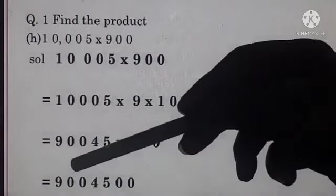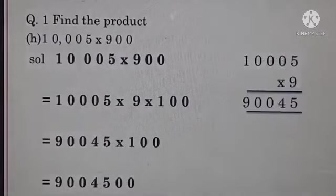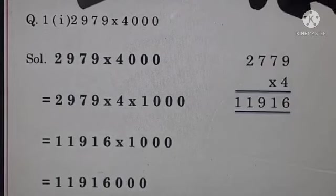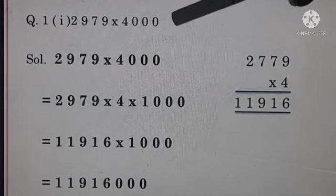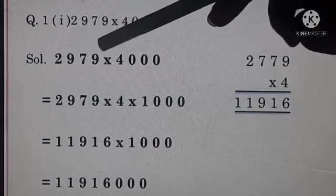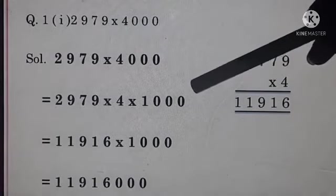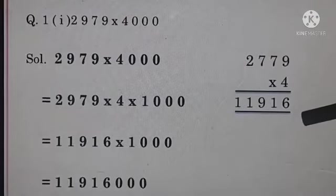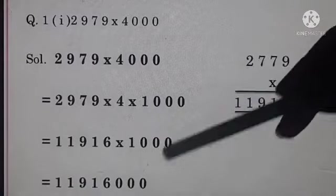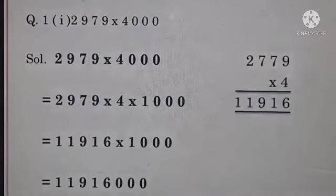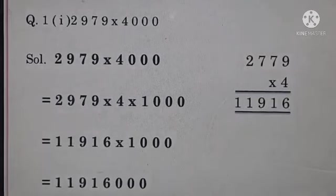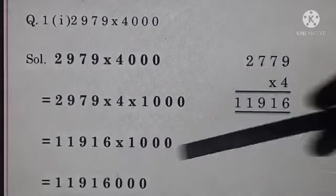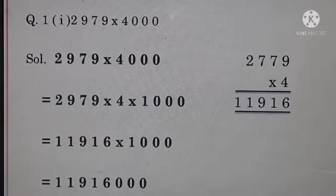So you have directly product right side two zeros put. So your answer is 9,004,500. I part: 2,979 multiply by 4000. 2,979 multiply 4 multiply 1000. Now multiply by 4: 11,916. And then multiply by 1000, so put three zeros to the right side. Answer 11,916,000. Correct?